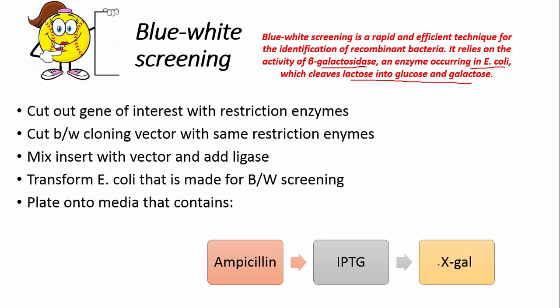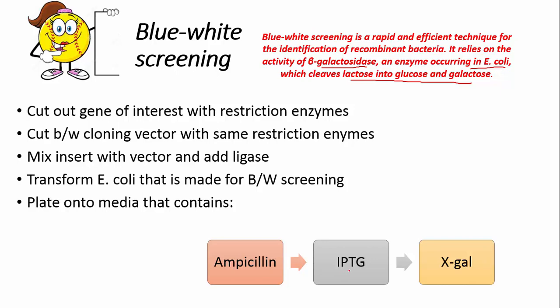The media contains ampicillin, IPTG, and X-gal. Ampicillin is used because untransformed E. coli cells are sensitive and will not grow — ampicillin will kill them. IPTG binds to the lac repressor and induces expression from the lac promoter.